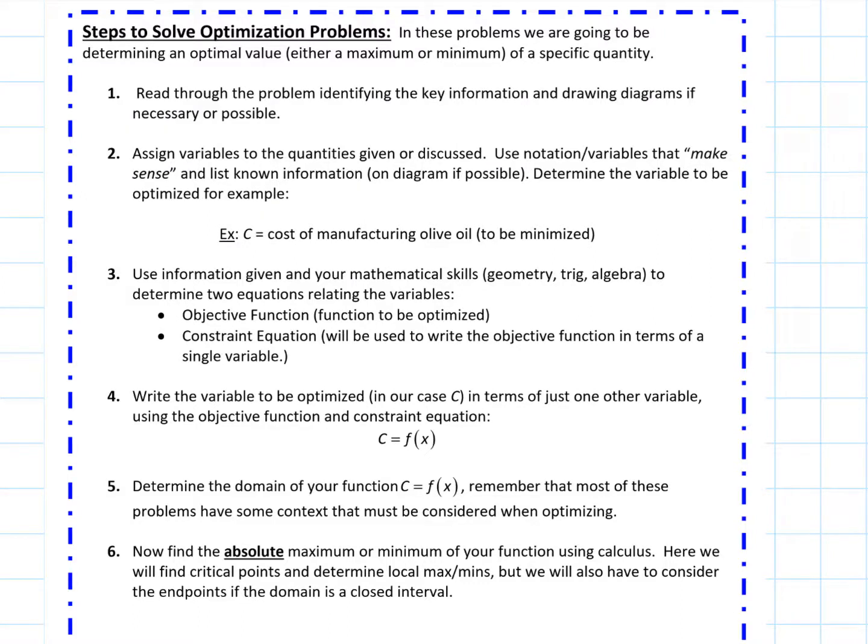Okay, so let's pick back up right where we left off with more optimization examples. Let's take a look again at the steps for when we are optimizing, which means to find a max or a min to a specific quantity.